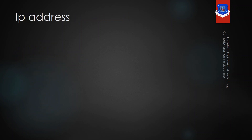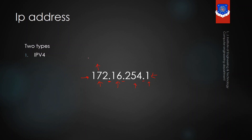Let's discuss IP addresses. There are two types: IPv4 and IPv6. IPv4 is represented in dotted decimal notation, which means each number is represented in decimal and separated by dots. If you convert each decimal number into binary, it will be represented in 8 bits.